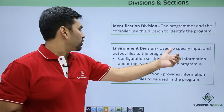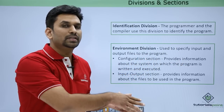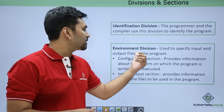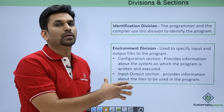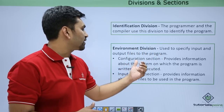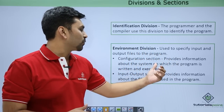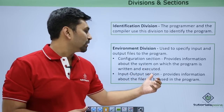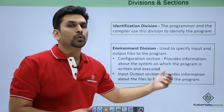In the environment division we specify input and output files used by the program. These files are put in the JCL — we pass the files from JCL and assign them a name in this division. There are two sections: the configuration section, which provides information about the system on which the program is written and executed, and the input-output section, which provides information about the files to be used in the program.